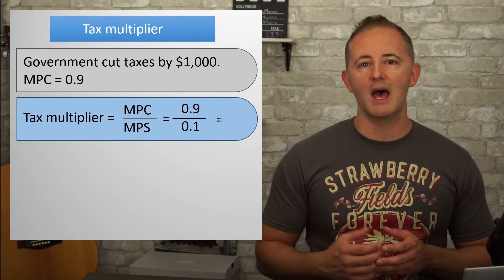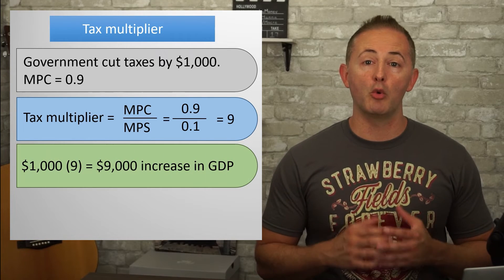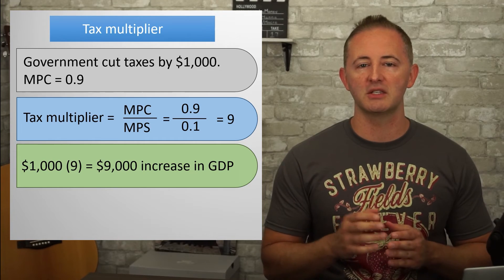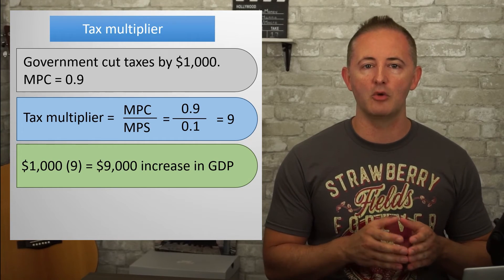Back to the math: 0.9 divided by 0.1 equals 9, meaning that the total increase in GDP from a $1,000 tax cut will be $9,000. And in case you're wondering, if you have a question involving government transfers, use the tax multiplier for the same reason. The transfer doesn't directly add to GDP since nothing's being bought or sold, so it's only indirectly once the recipient spends the money that they've received.